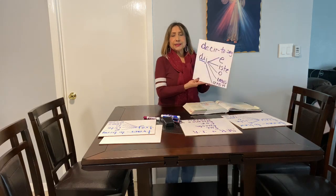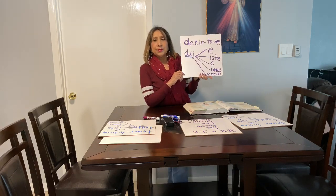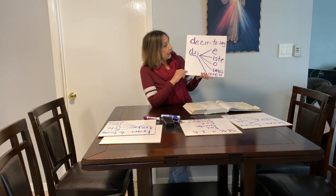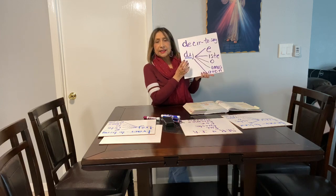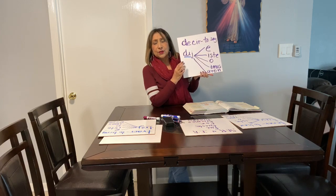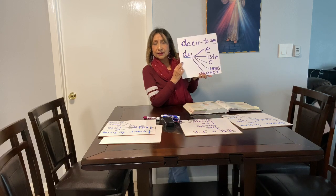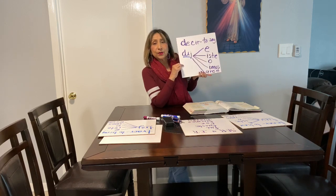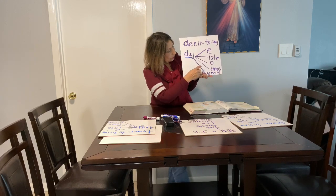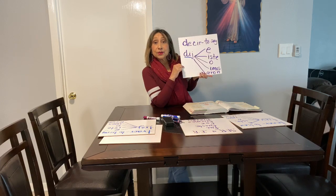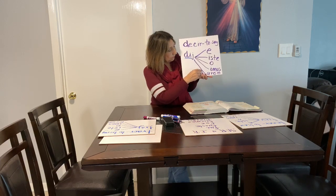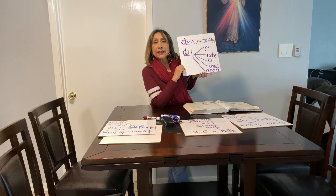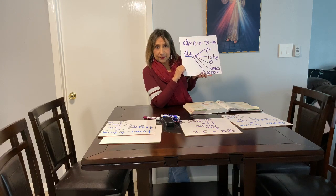The verb 'decir' in the preterite tense — the root is D-I-J. So you would say: yo dije la verdad; tú dijiste la verdad; él dijo la verdad; nosotros dijimos la verdad; ellos dijeron la verdad.